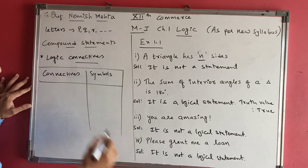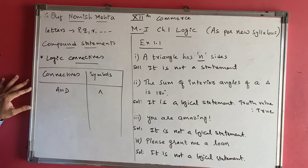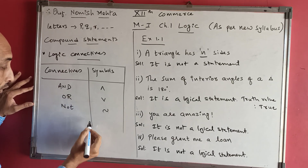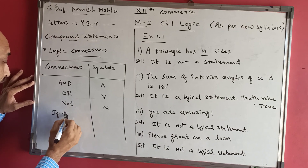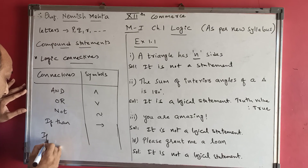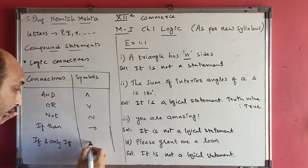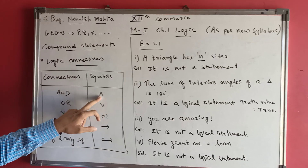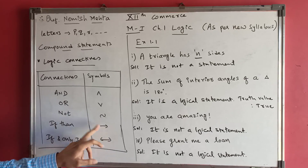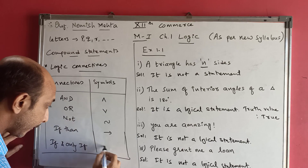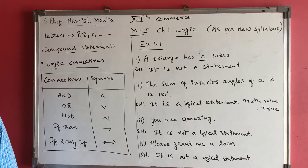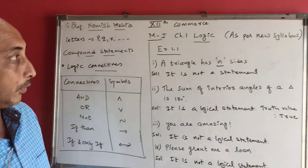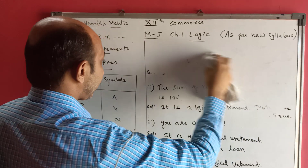We have five total logical connectives. The first connective is 'and', whose symbol is ∧. The second connective is 'or', whose symbol is ∨. The third connective is 'not', whose symbol is ~. The fourth connective is 'if then', whose symbol is → (arrow). The fifth connective is 'if and only if', whose symbol is ↔ (double arrow). These symbols are used when we use more than one connective or more than one statement.